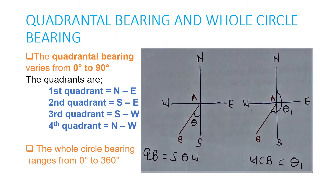Our Quadrantal Bearing — we want to measure line AB under the Quadrantal Bearing. So we are going to measure from the north or south, whichever is closer to the line. In this case, the south is closer, so we are measuring this angle from the south pole. Our angle will become theta.